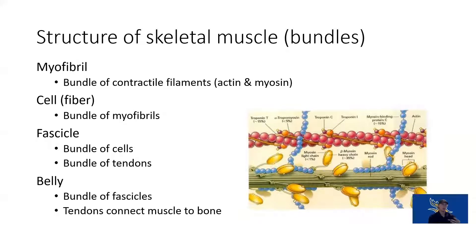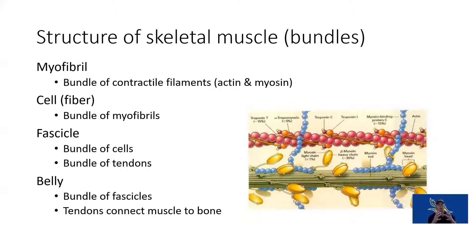All of these put together creates the muscle belly, which is the bundle of fascicles. Our muscle starts off at these really small points and expands to create this large structure that can contract and relax.